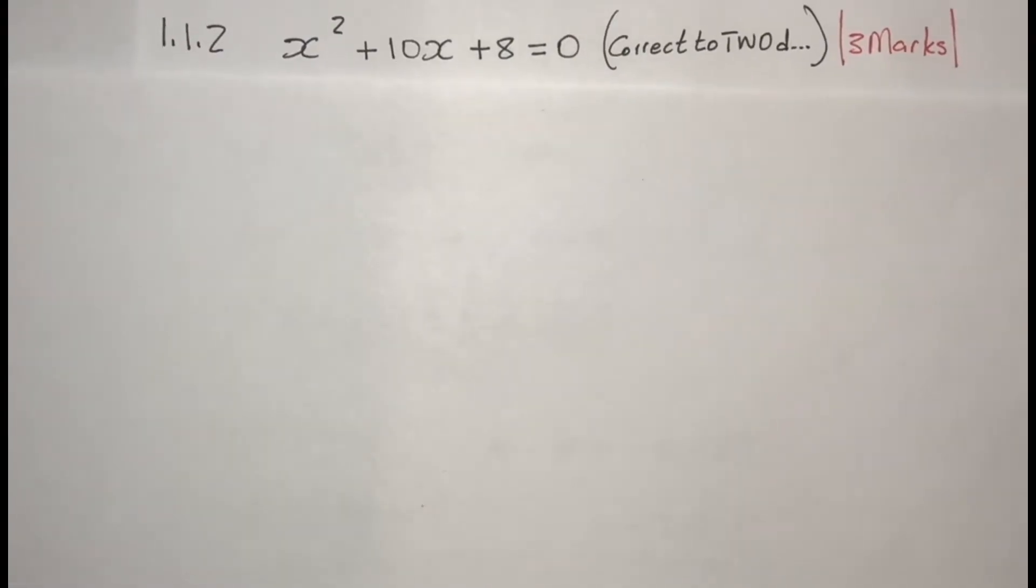So let's move to question 1.1.2, which is x squared plus 10x plus 8 equals zero, correct to two decimal places. And this question is allocated three marks.